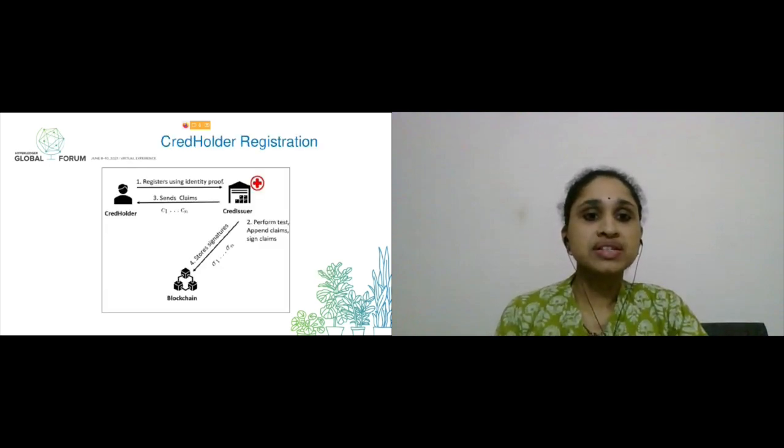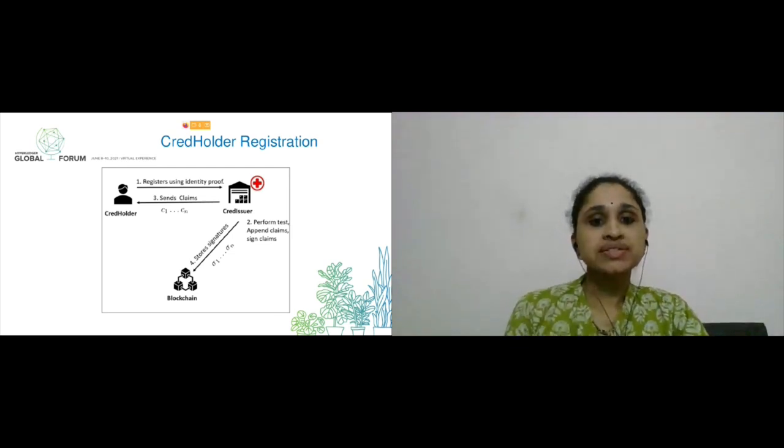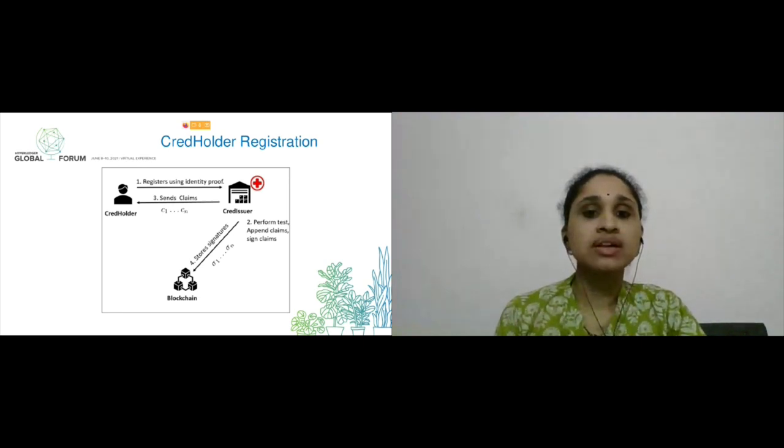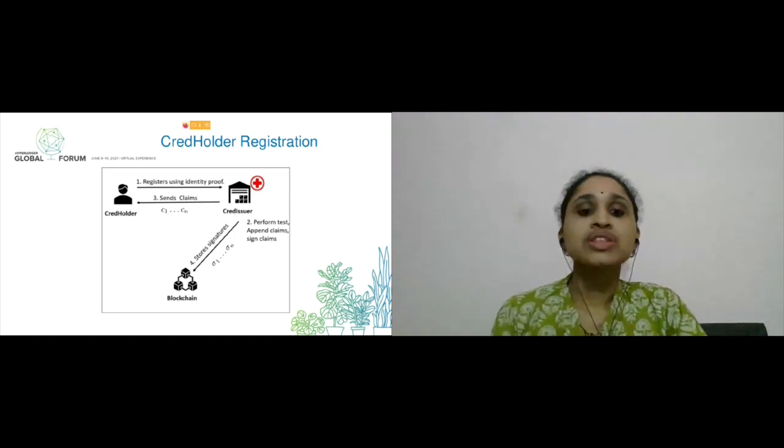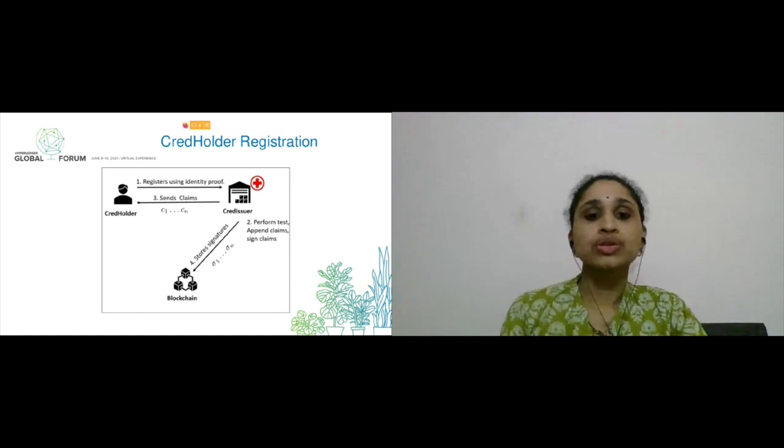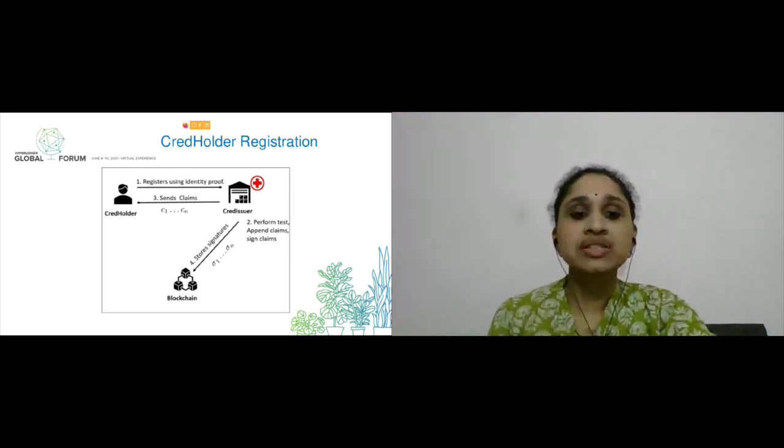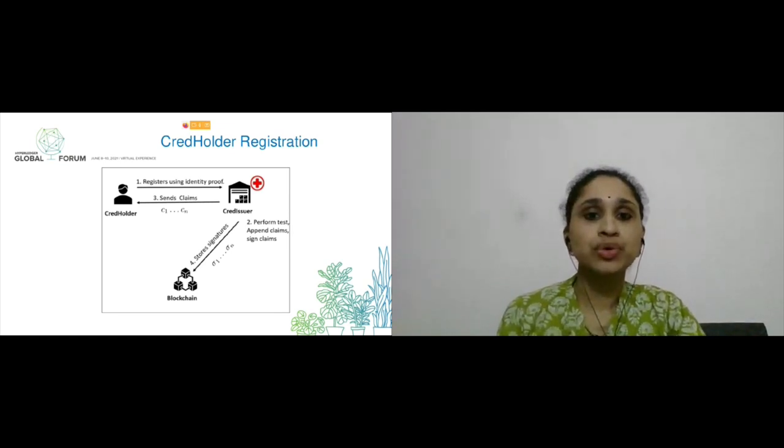Coming to the credential holder registration phase, we have a credential holder who wishes to get an immunity certificate. We have a credential issuer which is typically a healthcare provider or diagnostic center, and we have a blockchain. In credential holder registration phase, the credential holder approaches a healthcare provider and presents identity proof. The healthcare provider verifies the identity and performs the lab test. Once the test results are obtained, it creates a set of claims. Here each claim is a field in the immunity certificate. Example: first name can be a claim, your unique identification number can be a claim. These claims are signed by the healthcare provider's private key. Claims are sent to the holder and signatures are stored on the blockchain. This completes the registration phase. Now holder has necessary credentials that can be used to prove his or her immunity.